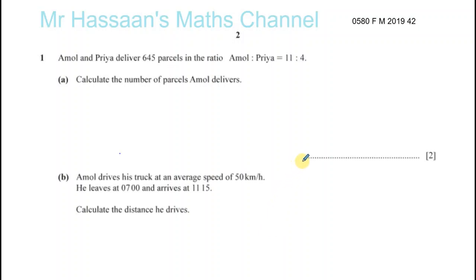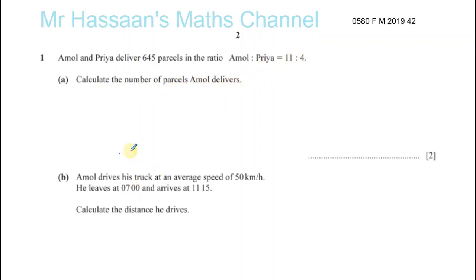Now for the February/March 2019 paper, variant 2. Starting with question number one: we're told about two people, Amol and Priya, who deliver 645 parcels in the ratio Amol to Priya of 11 to 4. Calculate the number of parcels Amol delivers. Here's the traditional way of doing this question.